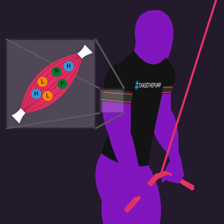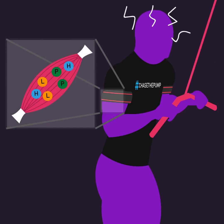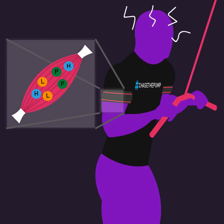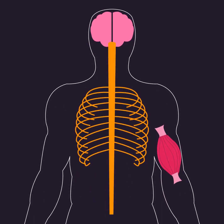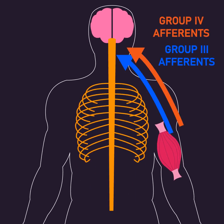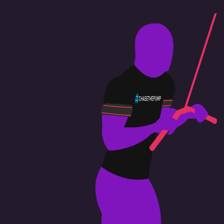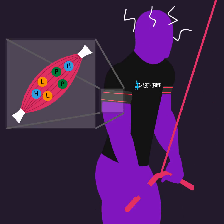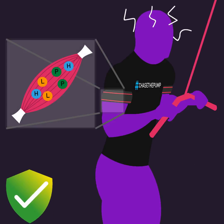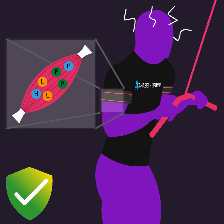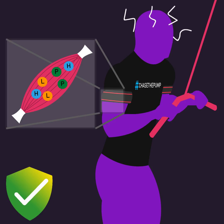Metabolites can also cause the perception of pain and discomfort due to afferents, which are nerve cells that signal from the muscle to the nervous system. Thus, pain and discomfort are positive indicators that you're creating a powerful muscle-building stimulus during blood flow restriction.